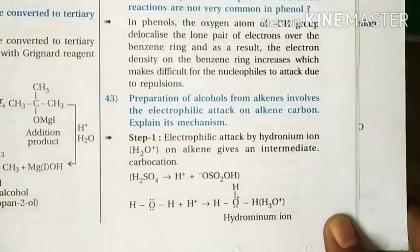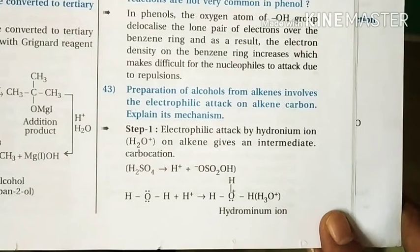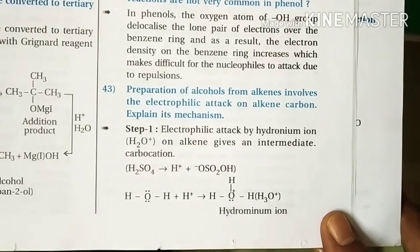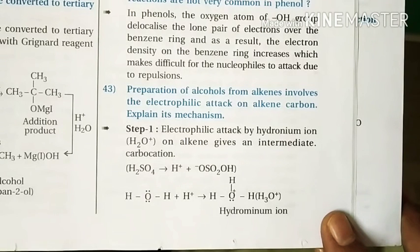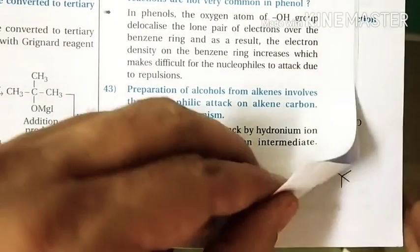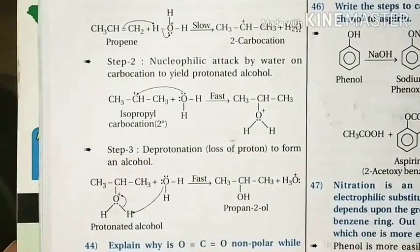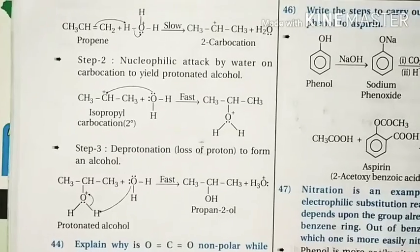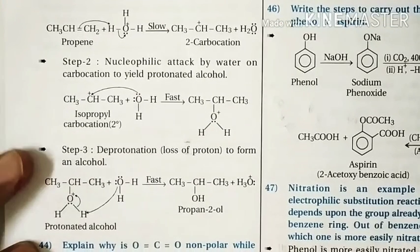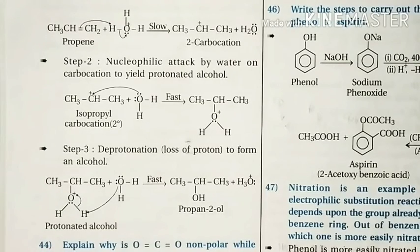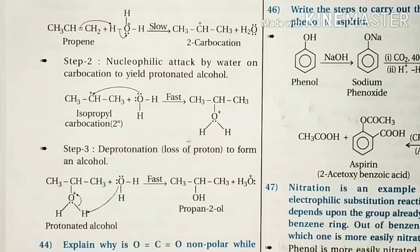Question 43: Preparation of alcohols from alkenes involves electrophilic attack on alkene carbon — explain its mechanism. We have seen this mechanism three times already. First, there is an electrophilic attack by the hydronium ion, formed from H2SO4. This hydronium ion attacks the alkene in a slow, rate-determining step. The resulting carbocation further reacts with the lone pair of water to form a protonated alcohol, which then loses a proton to form the alcohol.